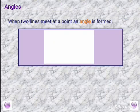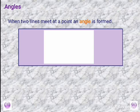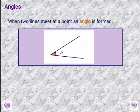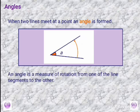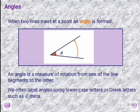Let's now move to angles. When two lines meet at a point, an angle is formed. We have two lines and the angle between them, which is angle A. It's very important to know how angles are labeled. We label angles using lowercase letters or Greek letters, for example theta.